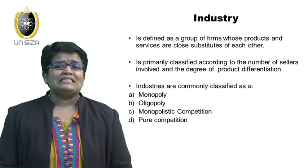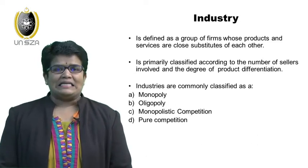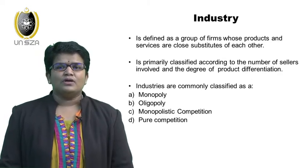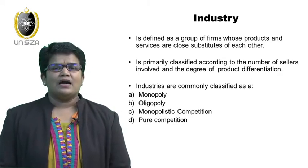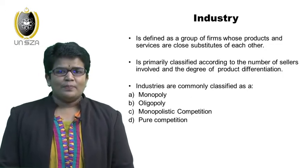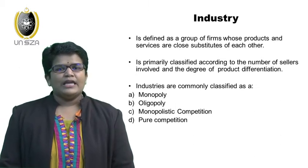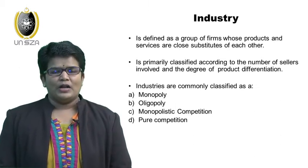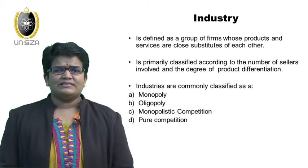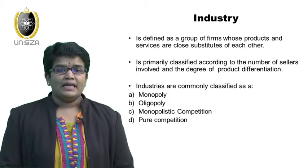Let us define the term 'industry.' Industry is defined as a group of firms whose products and services are close substitutes of each other. Industry is also primarily classified according to the number of sellers involved and the degree of product differentiation. Normally we classify the industry into four main categories.